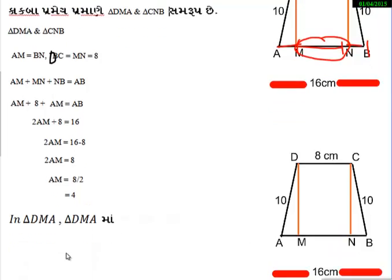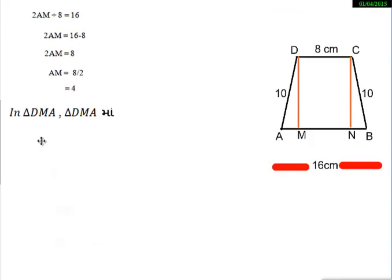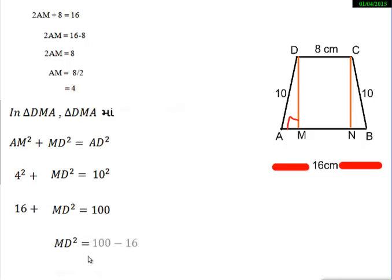Now we will find DM. What formula will be formed where right angle is formed? The sides adjacent to it: AM square plus MD square equals AD square. Now I will put the value: 4 square plus MD square equals 100. Keep MD square alone, take 16 to the other side - that's 84.